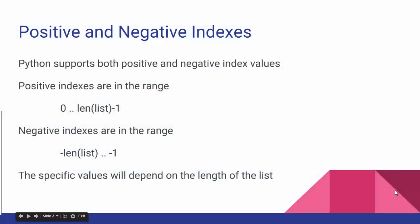Python supports both positive and negative index values. Positive indexes are in the range from 0 to the length of the list minus 1. Remember that indexes start at 0.